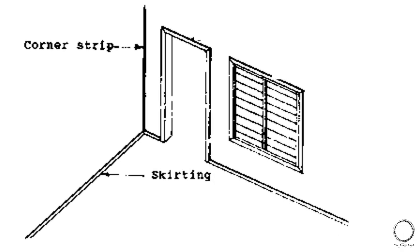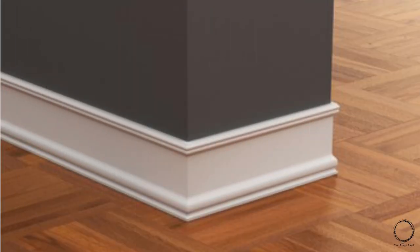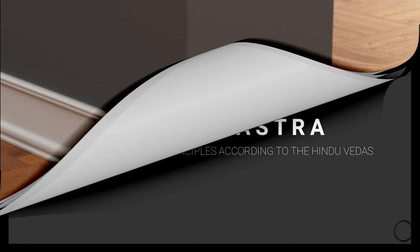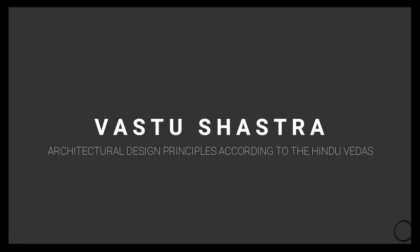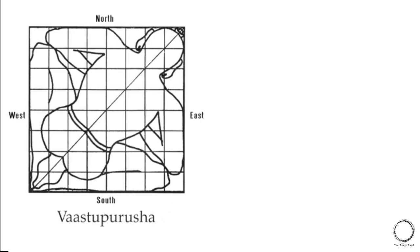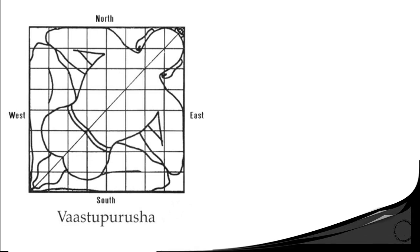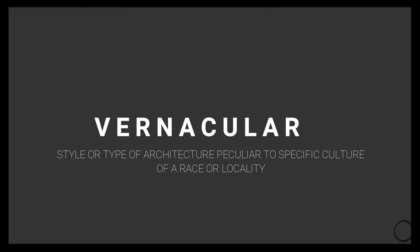The next term is skirting, which means a protective tiling at the base of the walls above floor finish. The flooring done on the wall as well — to protect walls from water, sweeping, or mopping and to protect the paint — is called skirting. Next, vastu shastra means architectural design principles according to the Hindu Vedas. Designs developed on these principles are dependent on the vastu purusha and the cardinal directions: north, south, east, and west.